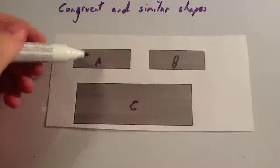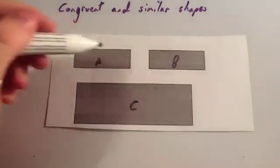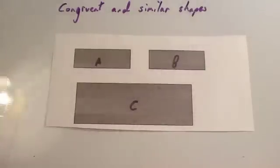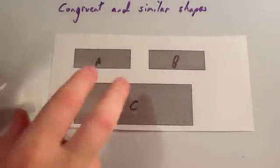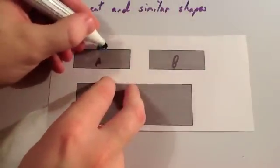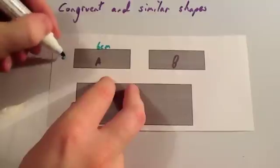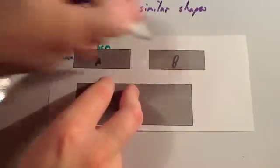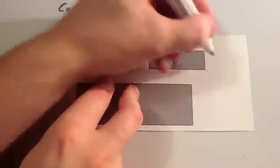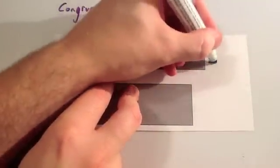Shape A and shape B are congruent to each other. I measured both of them earlier with my ruler and I found that this one was 6cm long and 2cm wide, and this one was 6cm long and 2cm wide.